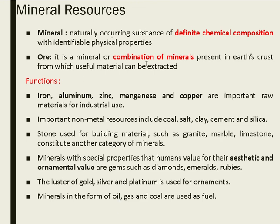Moving to mineral resources: a mineral has a definite chemical composition, while an ore is a combination of minerals. Metals like iron, aluminium, zinc, manganese, and copper are used for industries. Important non-metals include coal, salt, clay, cement, and silica. Stone is used for sculptures. Minerals with aesthetic and ornamental value include diamonds, emeralds, and rubies. Gold, silver, and platinum are used for ornaments. Minerals in the form of oil, gas, and coal are used as fuel.